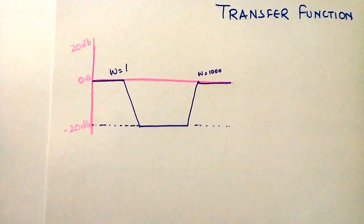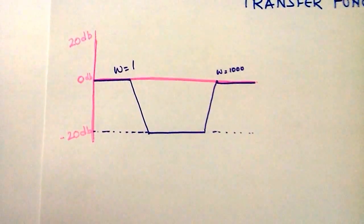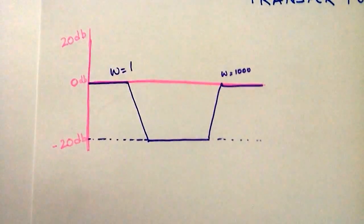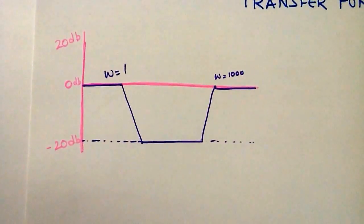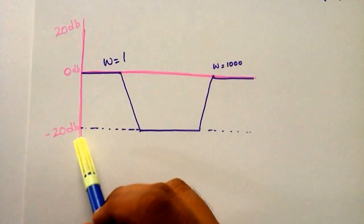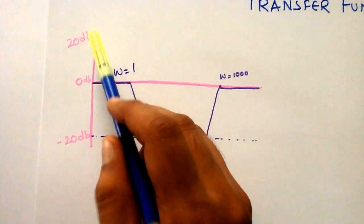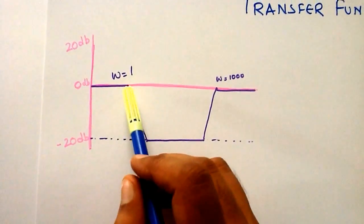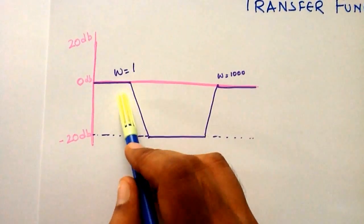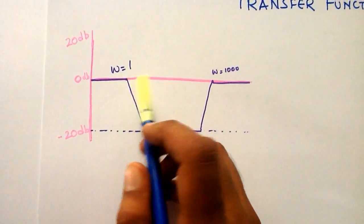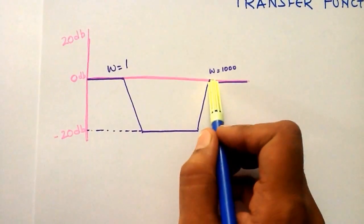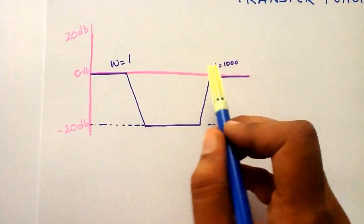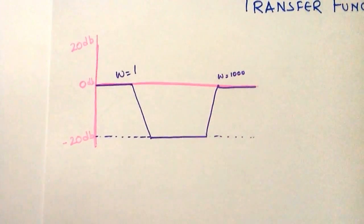Just look at the Bode plot which I have been given in the question. The magnitude here goes from minus 20 to plus 20 to zero, and I have been given two corner frequencies: omega equal to 1 and omega equal to 1000.